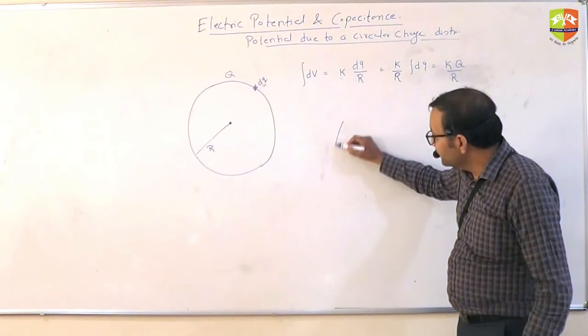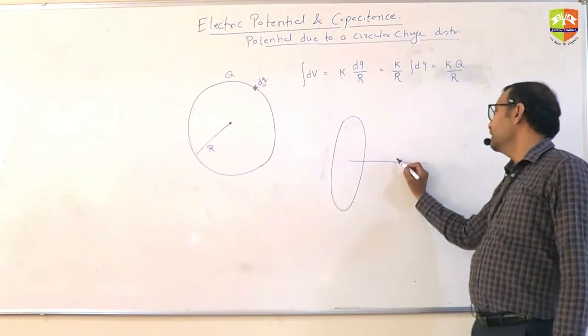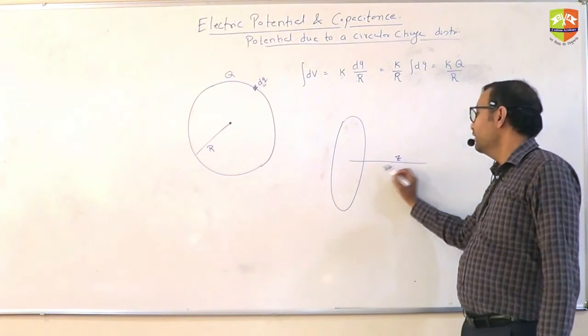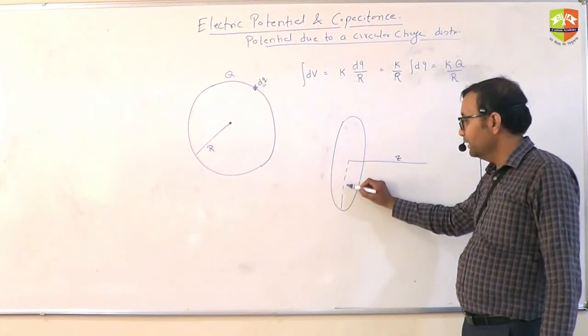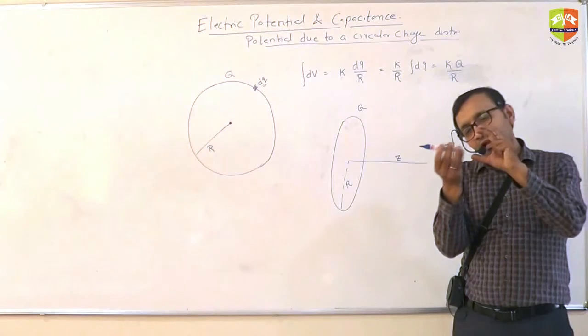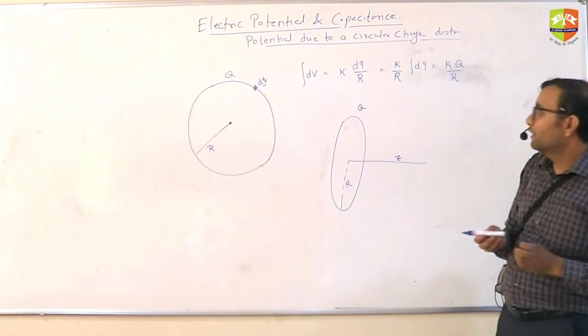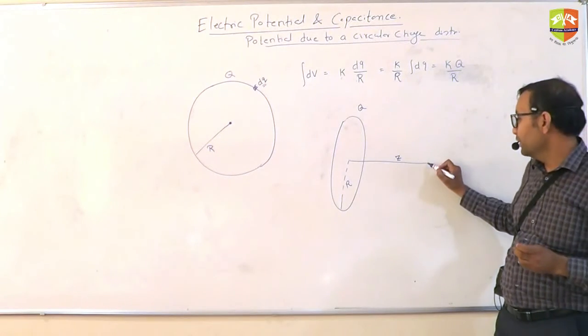Fine. Now you have, let's say, a circular charge and you are trying to find potential at a distance z away from the axis, along the axis. The radius is r, total charge is q. The ring is like this and you are finding along this line. It's a ring. Ring. Ring of charge. How much is the potential at this point?